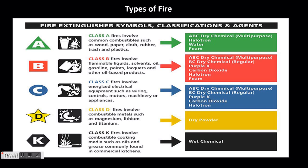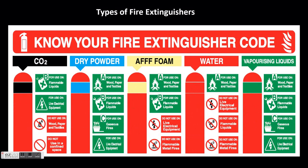Class B fires involve flammable gases or liquids such as propane, oil, and gasoline. Class C fires involve energized electrical components. Class D fires involve metal — a rule of thumb is if the name of the metal ends with the letters 'ium', it is a Class D fire; examples include aluminum, magnesium, beryllium, and sodium. Class D fires rarely occur in the roofing industry. Class K fires involve vegetable or animal cooking oils or fats, common in commercial cooking operations.